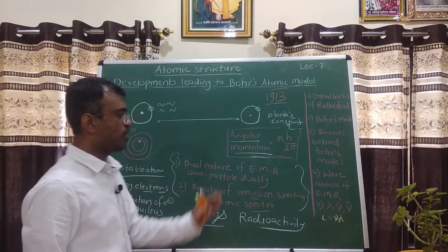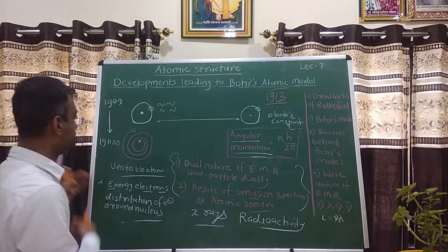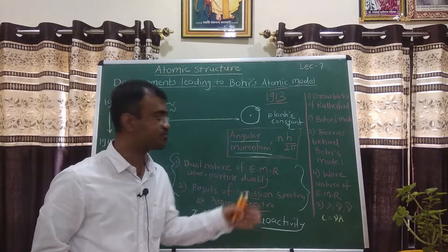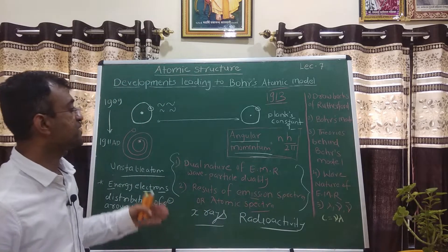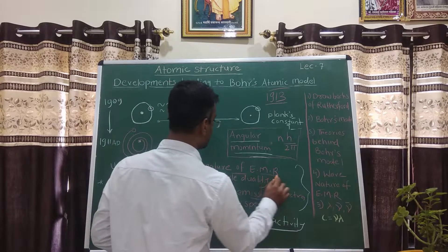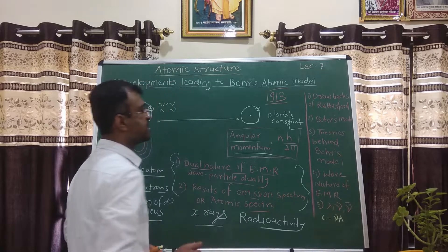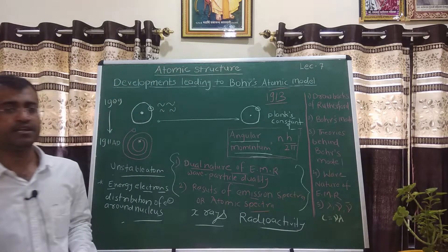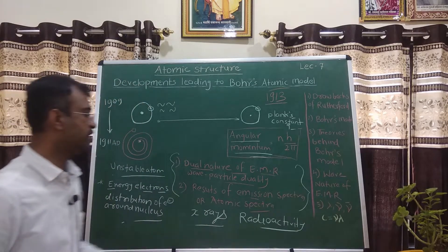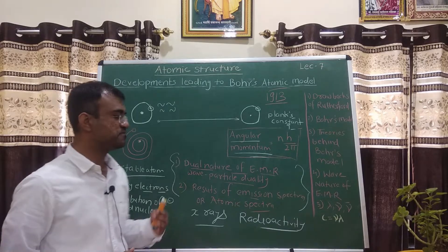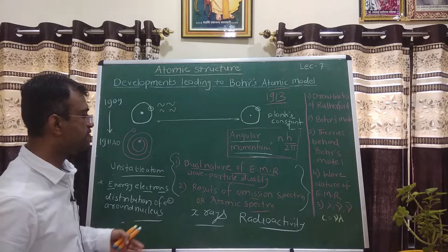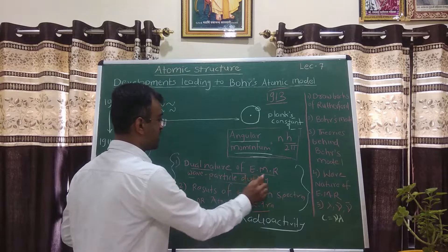He studied all the theories and correlated them with the atomic model, taking two years to propose it. Additionally, this was the time of discoveries of various electromagnetic radiations like X-rays, gamma rays, and the study of radioactivity. The most important theory — dual nature of electromagnetic radiation — helped Neil Bohr reach this model. Now, first we will look at the wave nature of electromagnetic radiations.